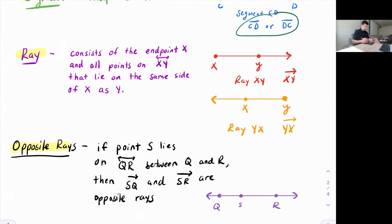Opposite rays. So if we have point S, for example, that lies on Line QR between points Q and R, then we would say SQ and SR are opposite rays. So opposite rays are going to have the same endpoint, but they extend in different directions or in opposite directions.